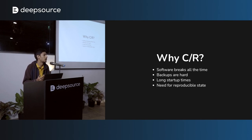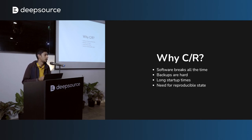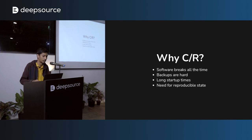Another use case is long startup times. There are a lot of applications that need to be warmed up first — health checks, cache initialization, and other setup steps. You wouldn't want to do this every time, especially if nothing is changing between initializations. Using checkpointing, you warm something up, initialize the cache, create a checkpoint, and the next time you kickstart your process from there. You don't have to redo the entire setup every time.